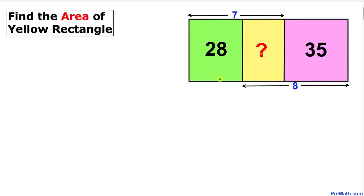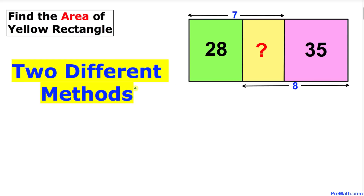Welcome to pre-math. In this video tutorial we have got three rectangles as you can see in the figure. The areas of the green and purple rectangles are given, and we are going to calculate the area of the yellow rectangle. I will share two different methods — the second method especially is going to be a lot simpler, so I would recommend you to watch this video till the very end.